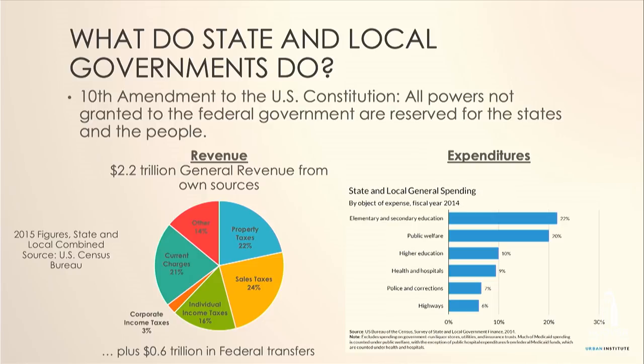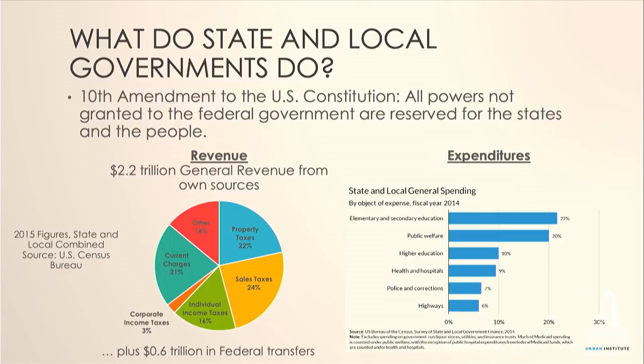States raise a fair amount of revenue from various sources — around $3 trillion of revenue in total, of which around $2.2 trillion is from what I call own sources. Those are primarily taxes like property taxes, sales taxes, individual income taxes, and the rest come from charges or fees for services that governments provide.